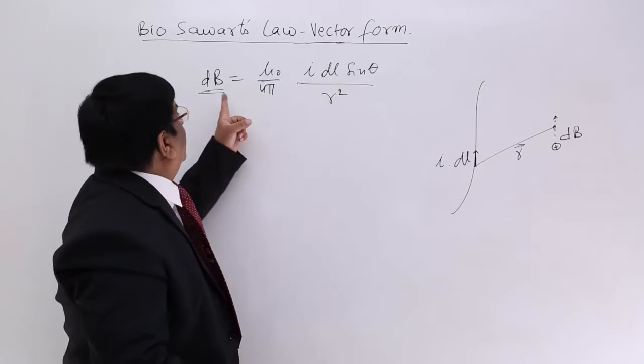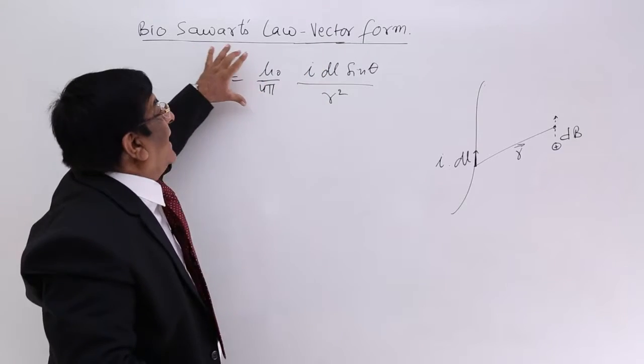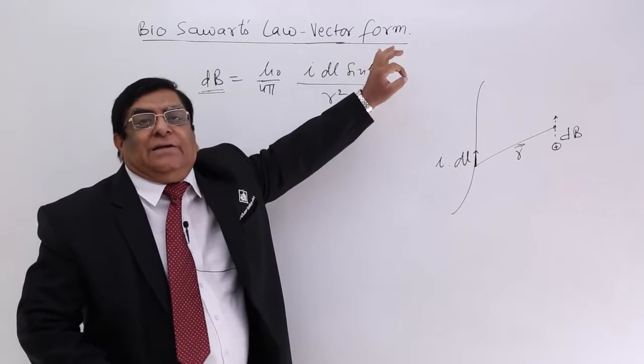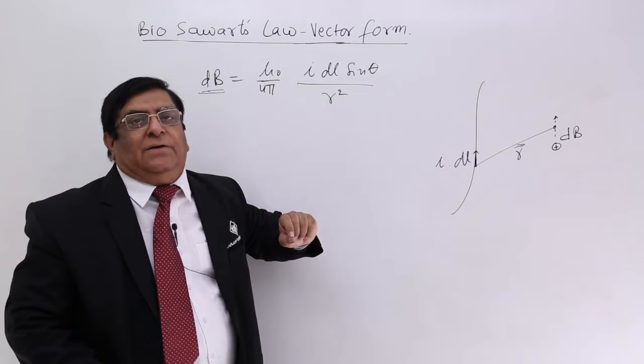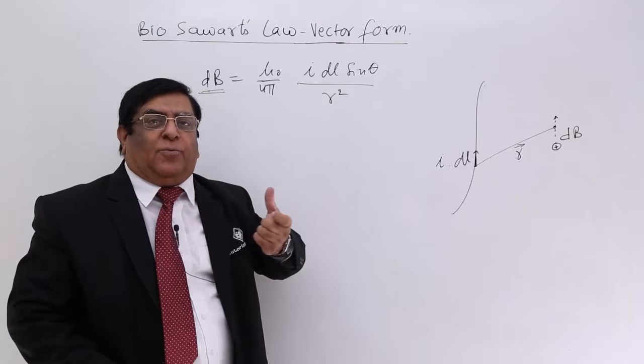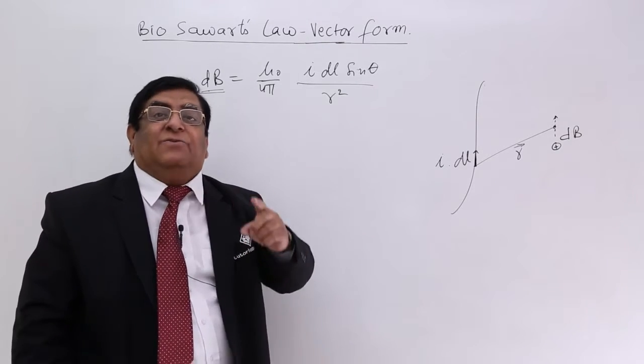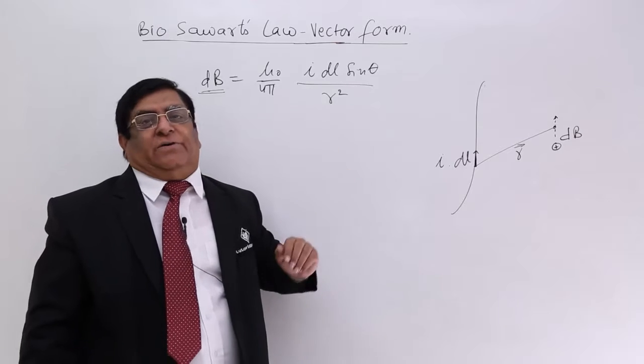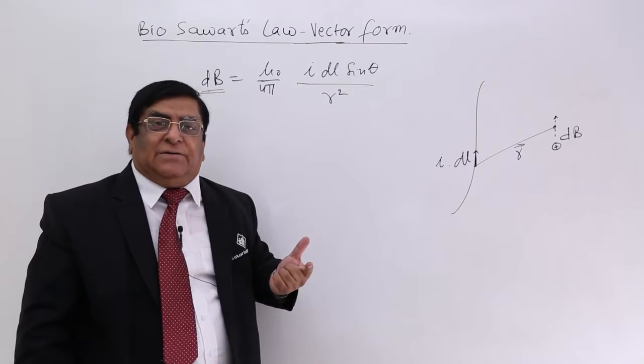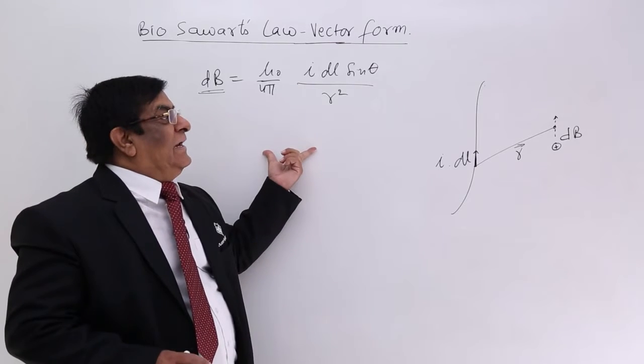This formula, Biot-Savart's formula that dB is equal to this, gives the magnitude of the magnetic field. But can we write it along with its direction? That form of writing Biot-Savart's law will be known as vector form of Biot-Savart's law, like you have done vector form of Coulomb's law. This can also be written in a vector form.